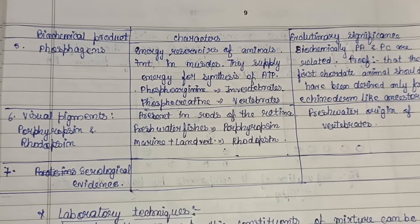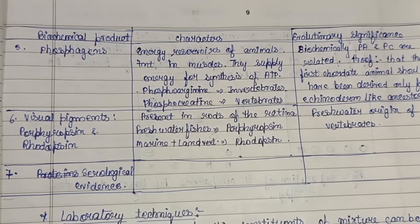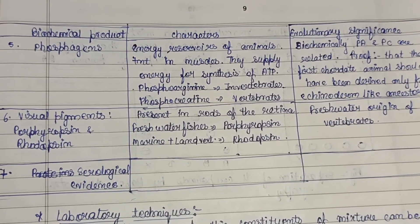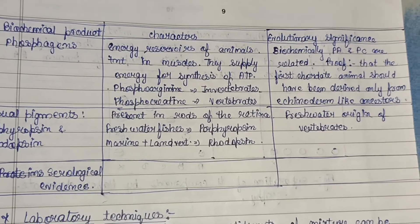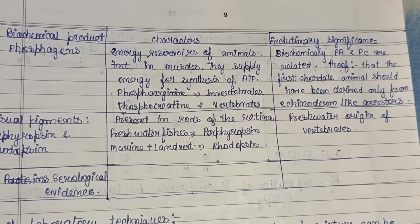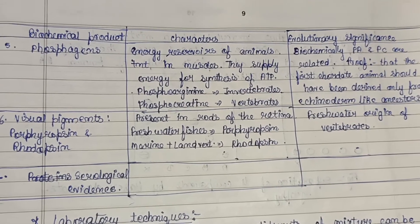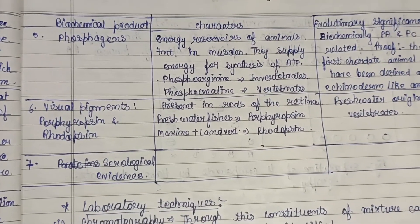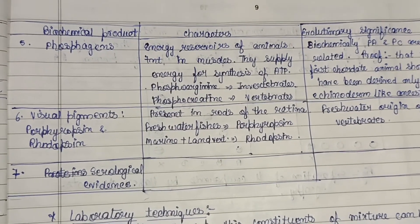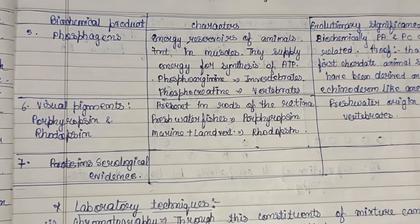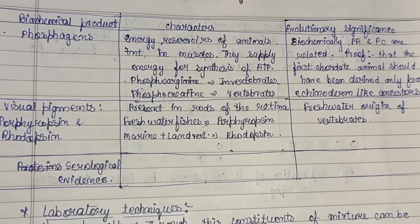Phosphagens are energy reservoirs of animals present in muscles, supplying energy for synthesis of ATP. Phosphoarginine is present in invertebrates and phosphocreatine in vertebrates. Their evolutionary significance: biochemically, phosphoarginine and phosphocreatine are related, proving that the first chordate animal should have been derived from echinoderm-like ancestors. Visual pigments — porphyropsin and rhodopsin — are present in the rod cells of the retina. Freshwater fishes possess porphyropsin, while marine water and land vertebrates possess rhodopsin, proving the freshwater origin of vertebrates.